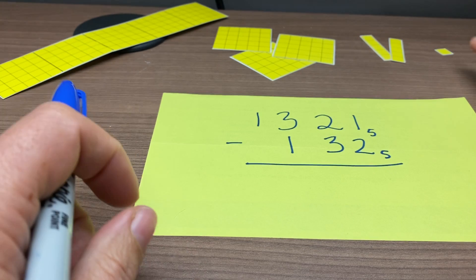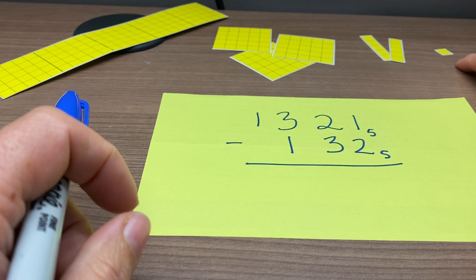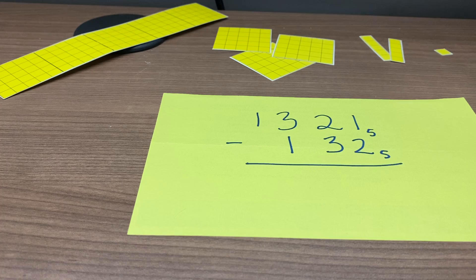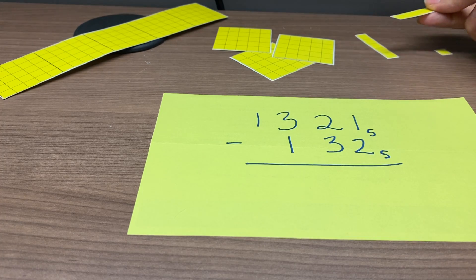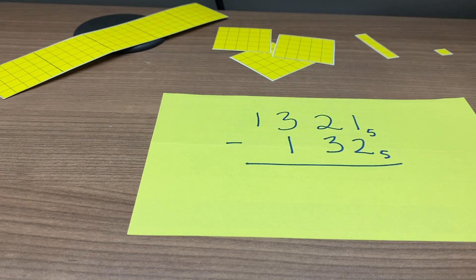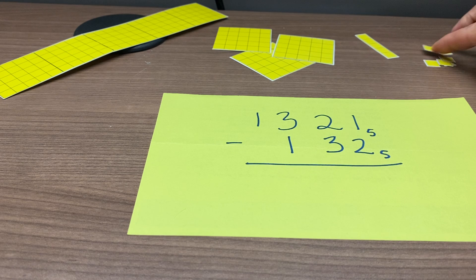So right off the bat, you can see we don't have 2 here in order to do that, so we will have to make some more of these by trading 1 of these for 5 singles.